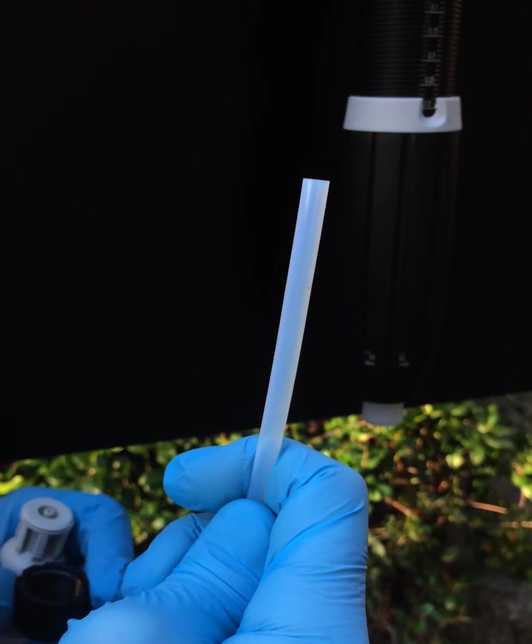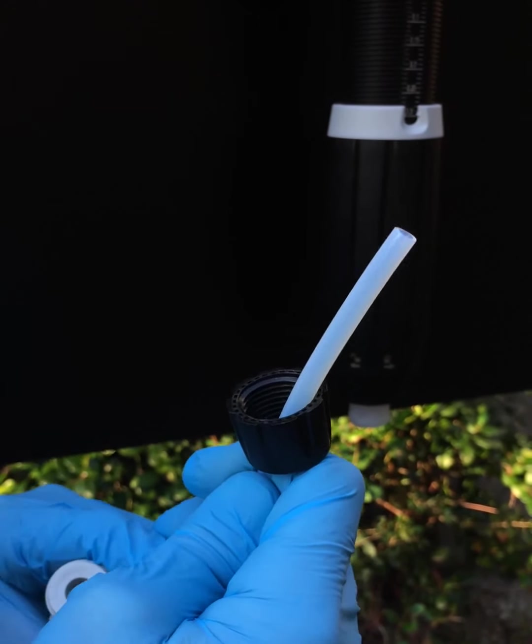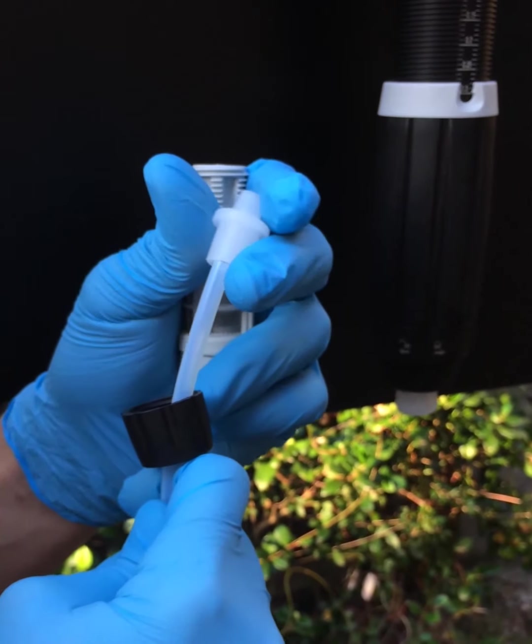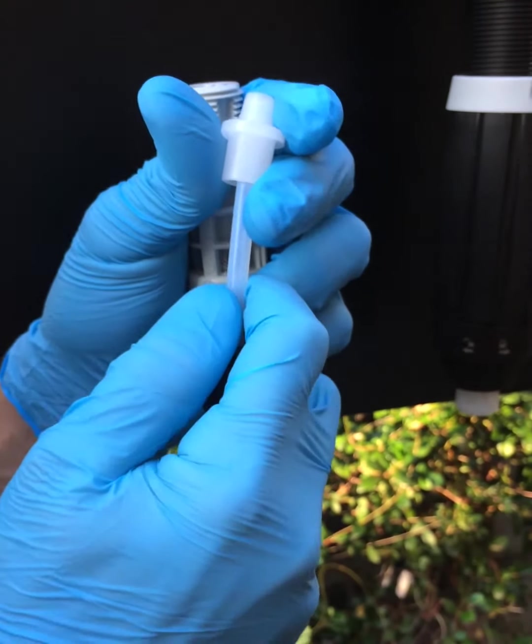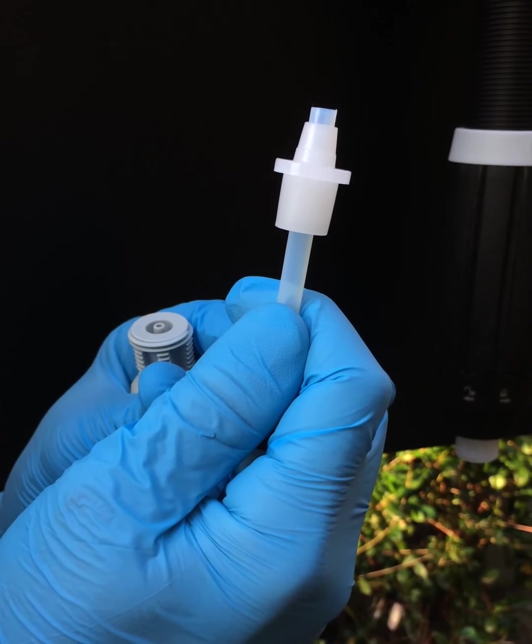To reattach the hose to the strainer, slide the nut over the end of the hose. Then slide the ferrule large end first over the hose and push the hose so that a small amount is sticking out and exposed through the end of the ferrule.